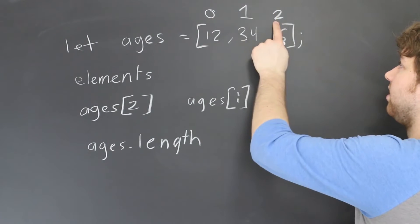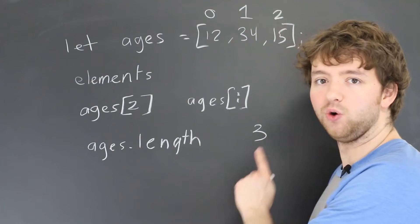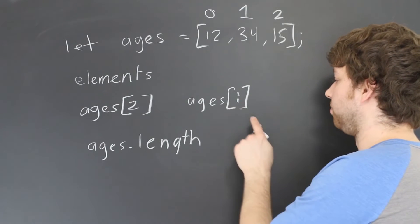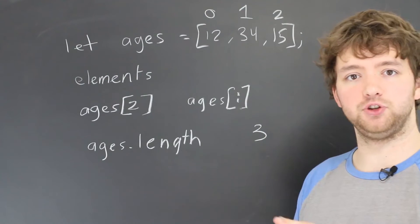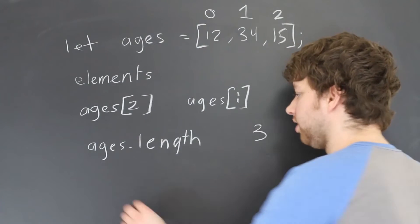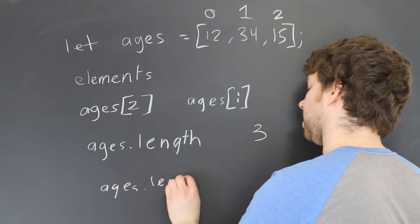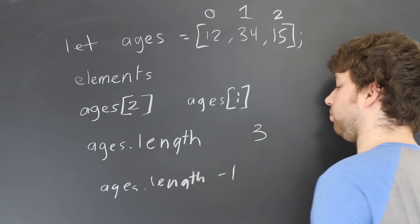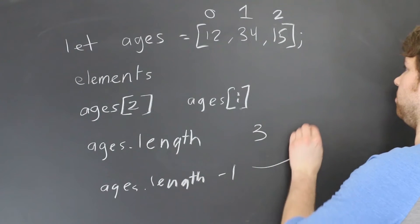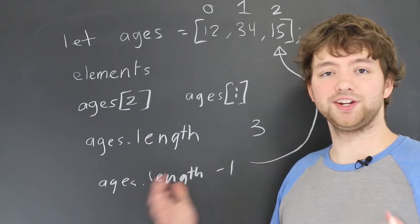So this is three, but the highest index is two. You want to make sure you don't go to i equals three—you want to stop at i equals two. You can always use ages.length minus one. In general, if you do ages.length minus one, that is going to be used to grab the last element.